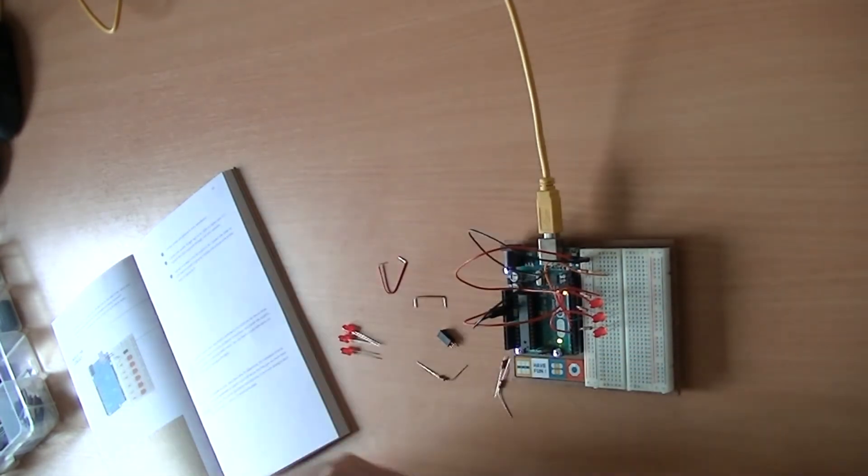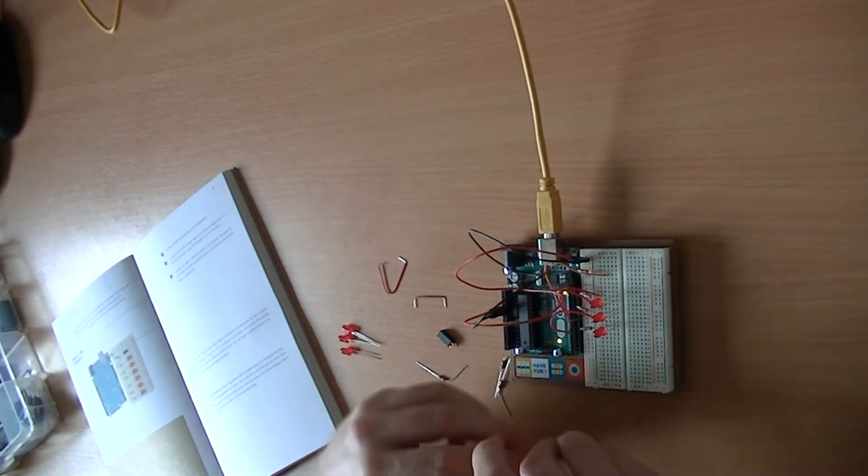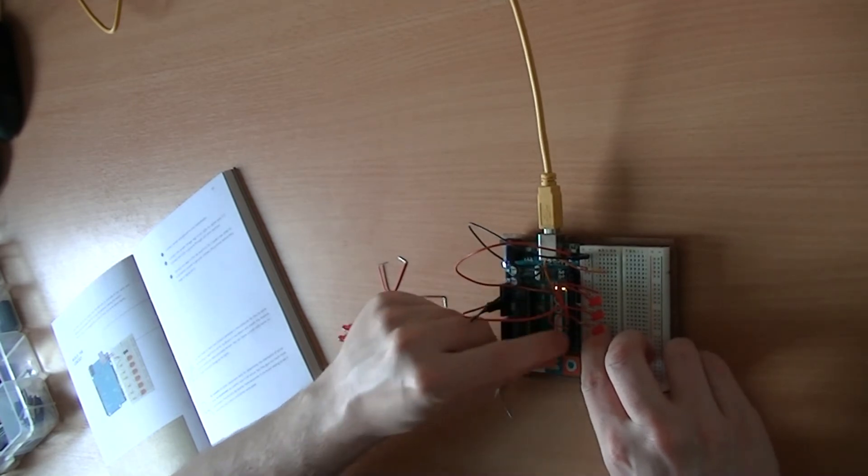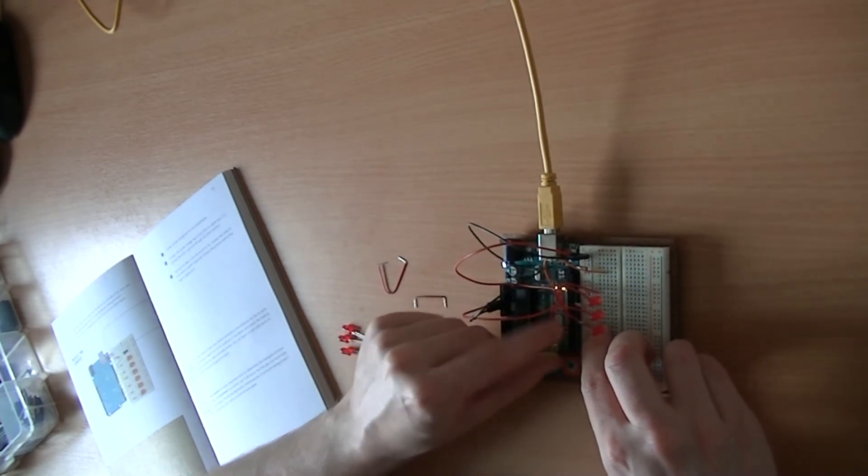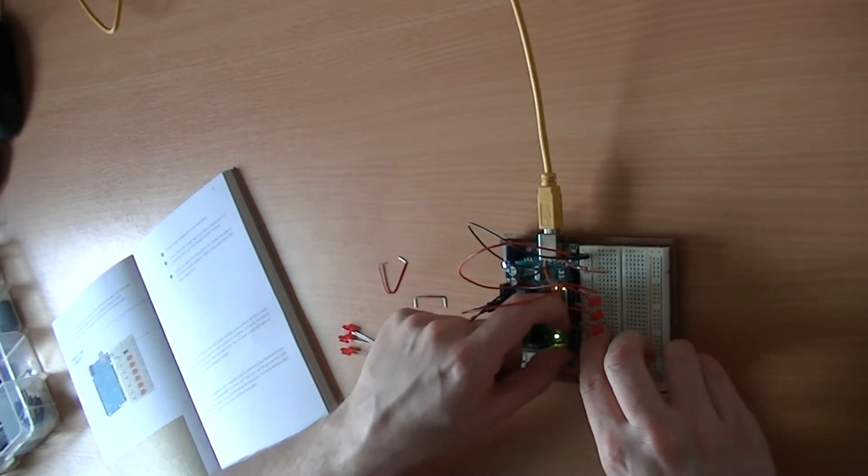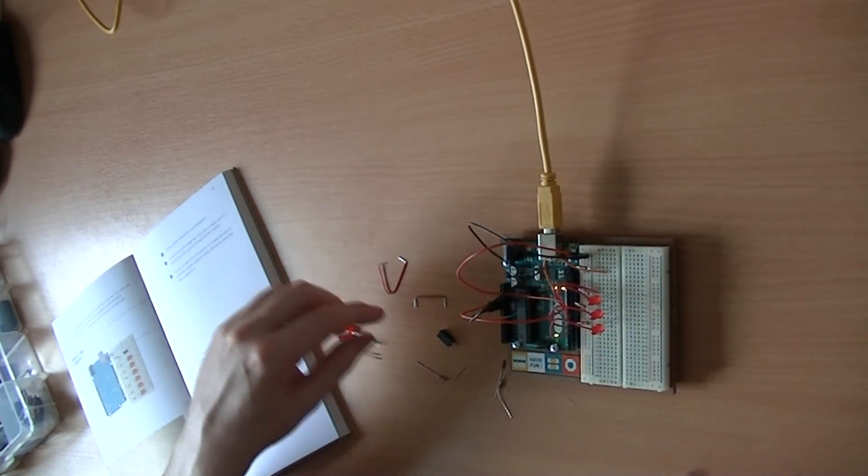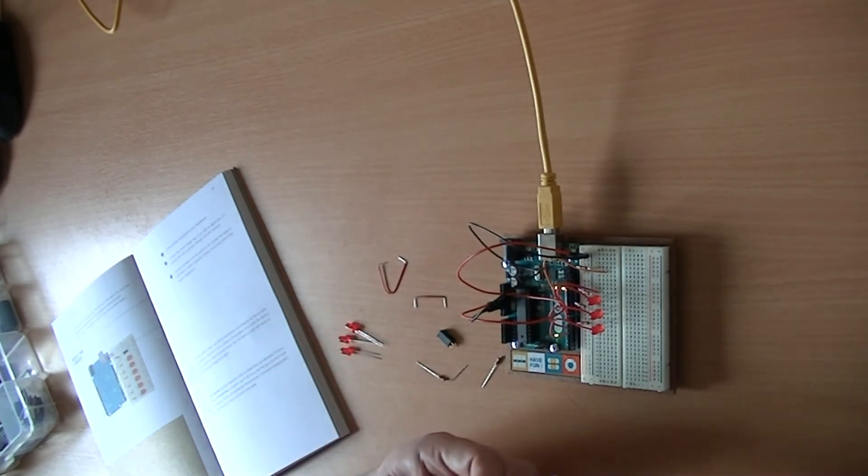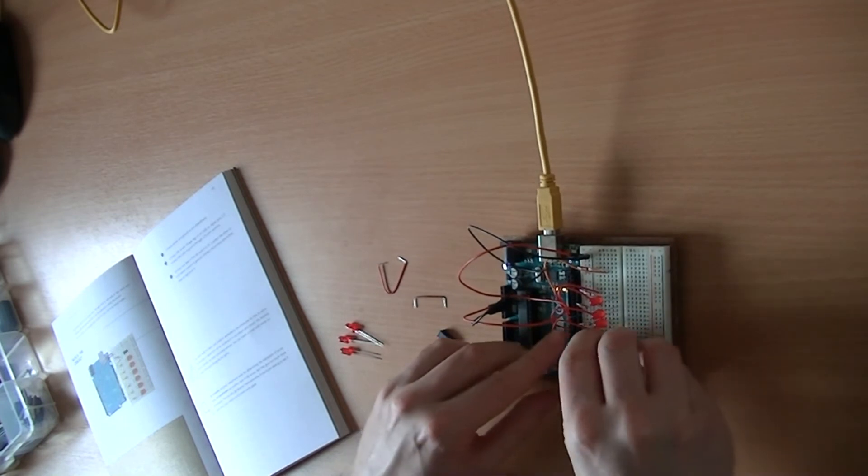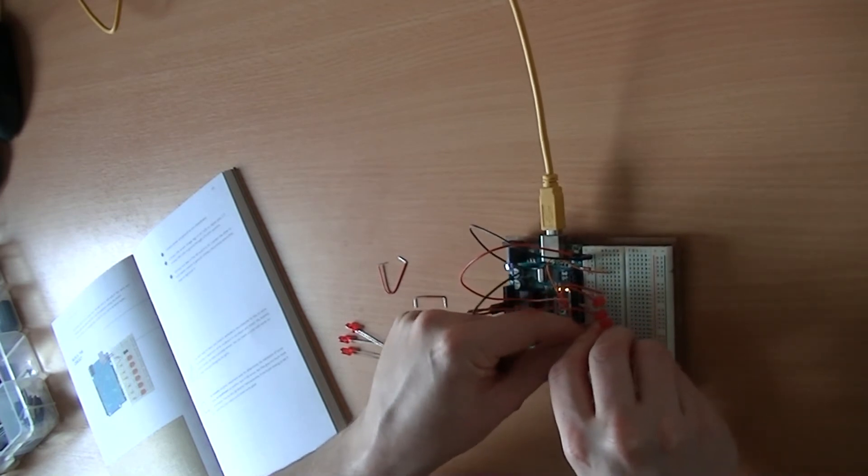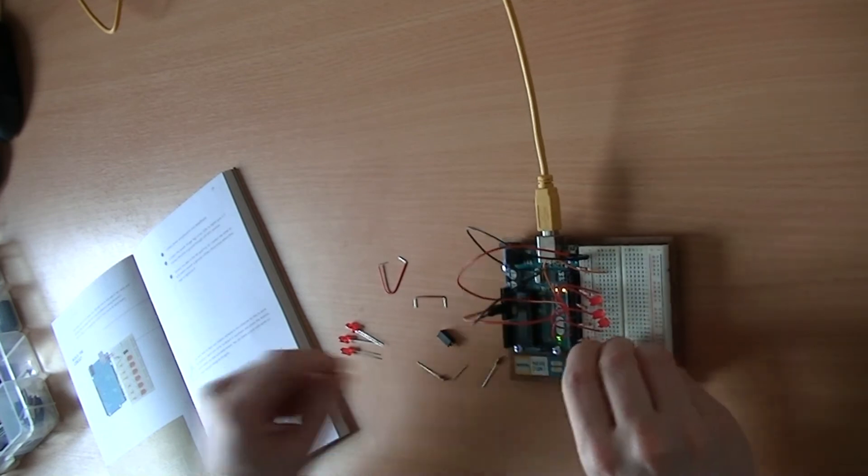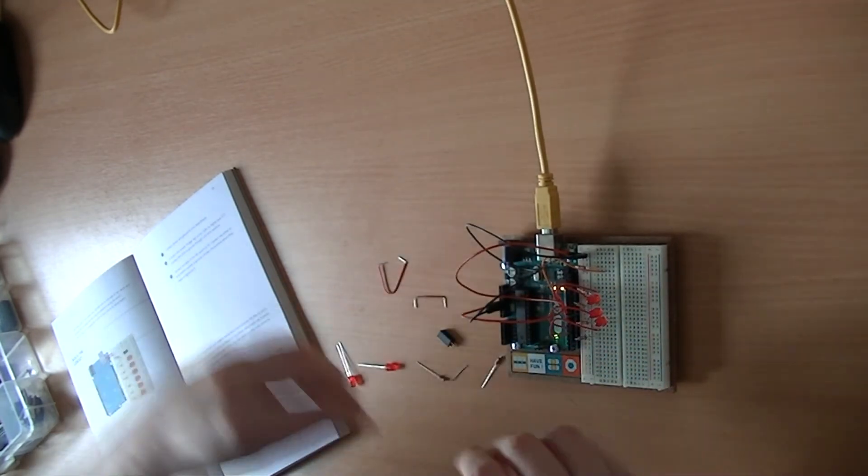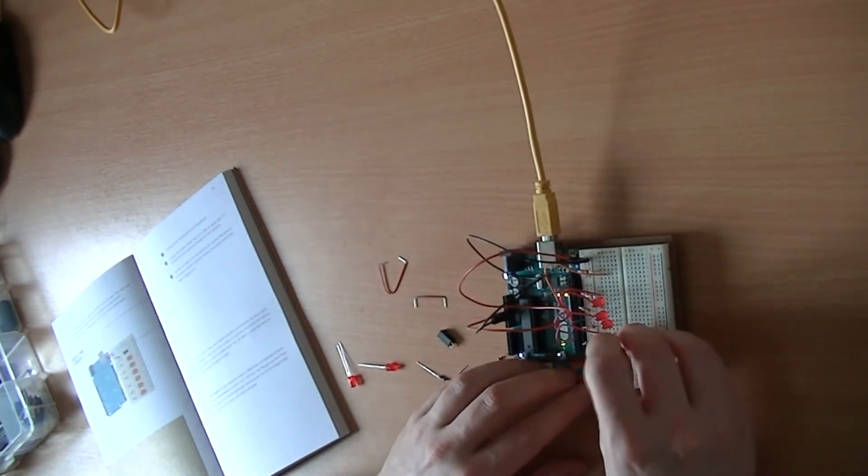And the next one is going to be rows 19 and 20 to digital port 5, like so. And let's get the resistor in place between row 20 and the ground. And then the LED, rows 19 to 20.